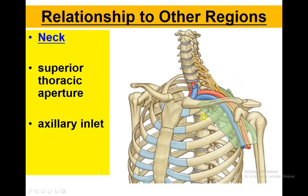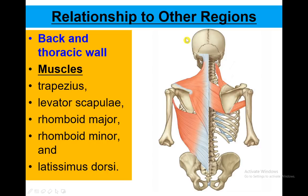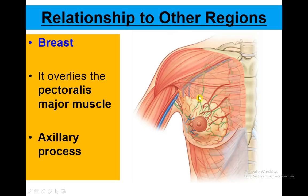Let's talk about the relationship to the outer regions of the upper limb. We can see the relationship of the upper limb with the neck — nerves and blood vessels from this region pass through the axilla inlet and come into the upper limb. For the back and thoracic wall, we have trapezius, and under that levator scapulae and rhomboid minor and major, and latissimus dorsi which also attaches at the humerus. Regarding the breast, it overlies the pectoralis major muscle and its axillary tail goes deep into the fascia.